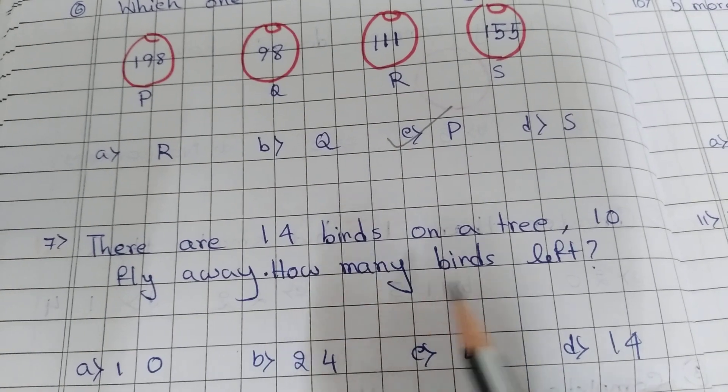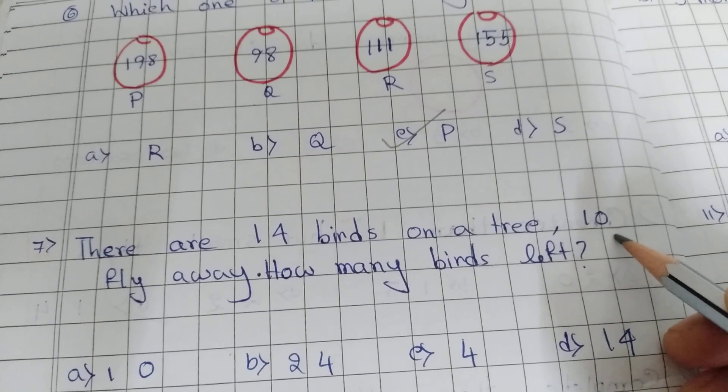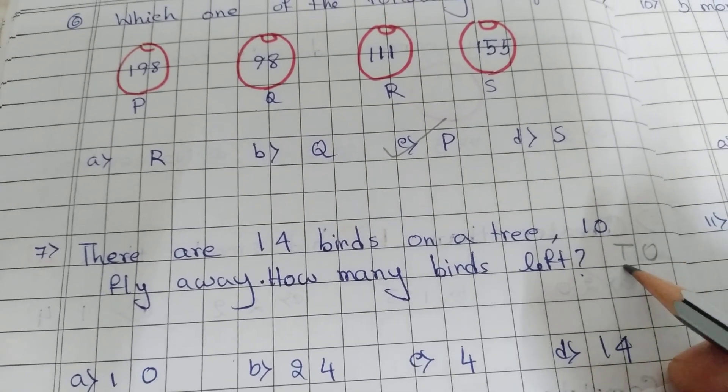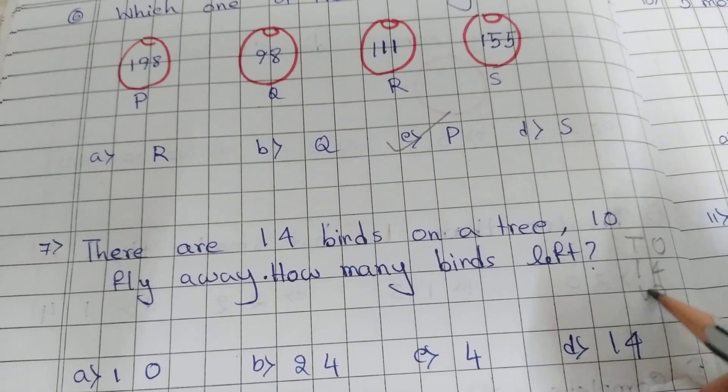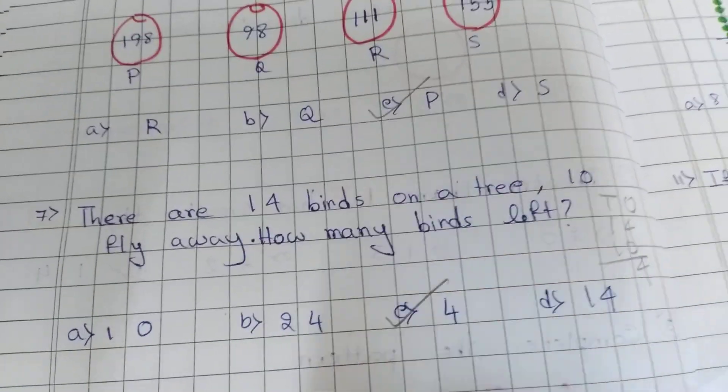There are 14 birds on a tree. 10 fly away. How many birds left? That means it's minus, fly away. So 14 minus 10 equal to 4. Option C is correct.